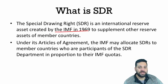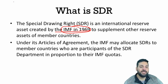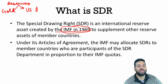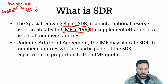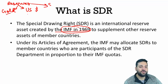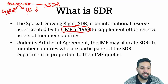SDR was created by the IMF in 1969. Countries like India keep their reserves in the form of gold and US dollars. SDR is an international reserve asset besides gold and the US dollar, and countries can keep their reserves in the form of SDRs.